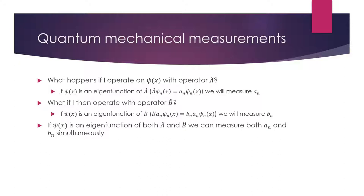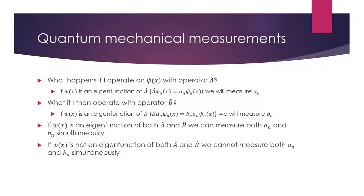However, if our wave function is not an eigenfunction of the operator we try to use, any attempt to measure that value will change the wave function — it will force it into a different eigenfunction of that operator. We won't be able to know both measurements simultaneously because doing measurement A will change the wave function so that B is different than it was before.